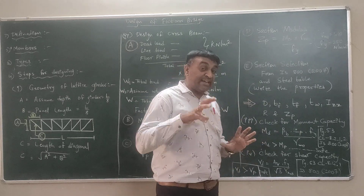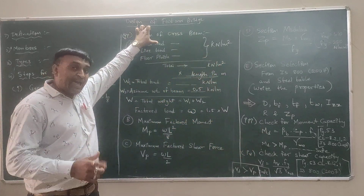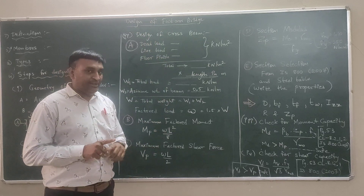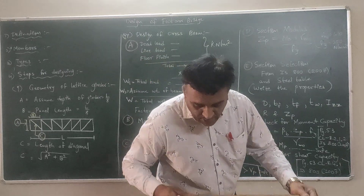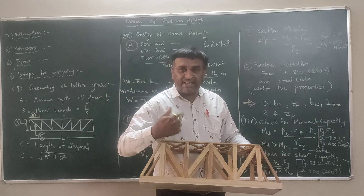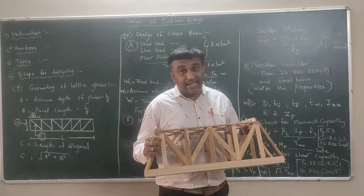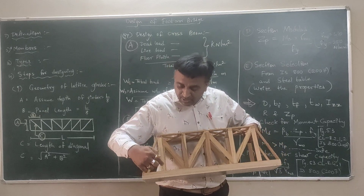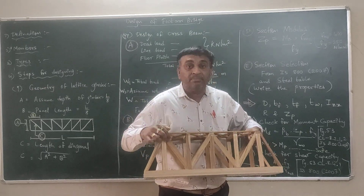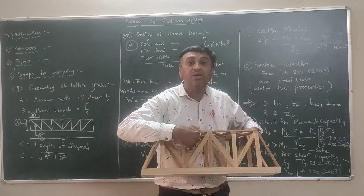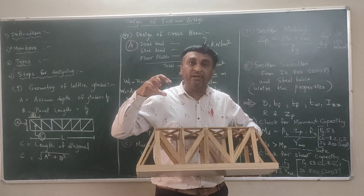The next part is to design the type of foot over bridge — for example, C-type or N-type. In the next lecture, we will discuss the N-type foot over bridge, designing its vertical members, diagonal members, bottom chord, and top chord. We will find the individual load on each member and then design the appropriate steel section for each member.